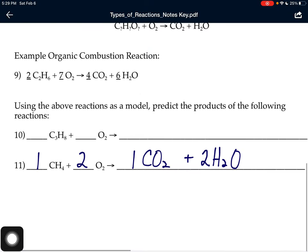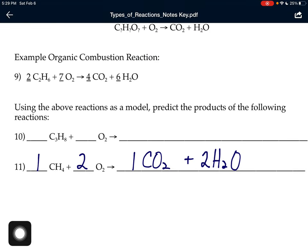Number 11 is an example of our organic combustion. Organic combustion is when you have some kind of carbon-based compound being added to oxygen. Every time you have organic combustion, you're going to get carbon dioxide and water as your products. The only thing you have to do after that is balance.